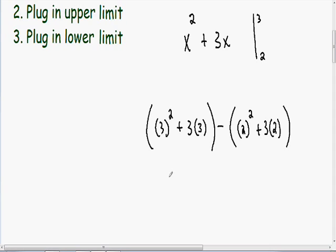Now we just need to do some multiplication, addition, and subtraction. In our first parentheses we have 3 squared which is 9 plus 3 times 3 which is 9. So 9 plus 9 is going to be 18.